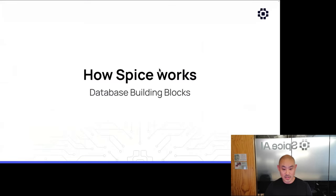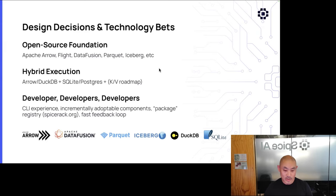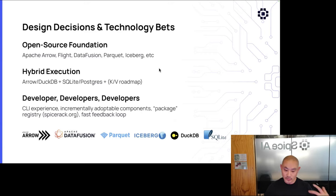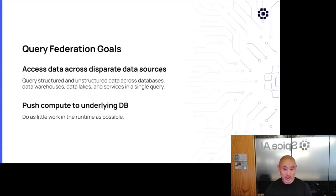How does all of this work? Spice is also built on database building blocks. Key design decisions: a pure open-source foundation — Arrow, Flight, DataFusion, Parquet, Iceberg. From our learnings running DuckDB at cloud scale, sometimes you actually want a row-based or OLTP database, so we support both DuckDB and SQLite, with key-value on the roadmap. We also wanted to make it as developer-friendly as possible, with a package registry of datasets and models and a really fast feedback loop.